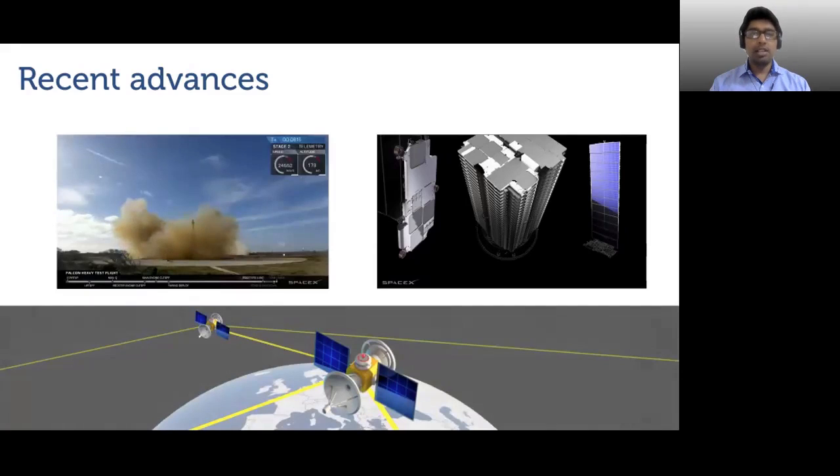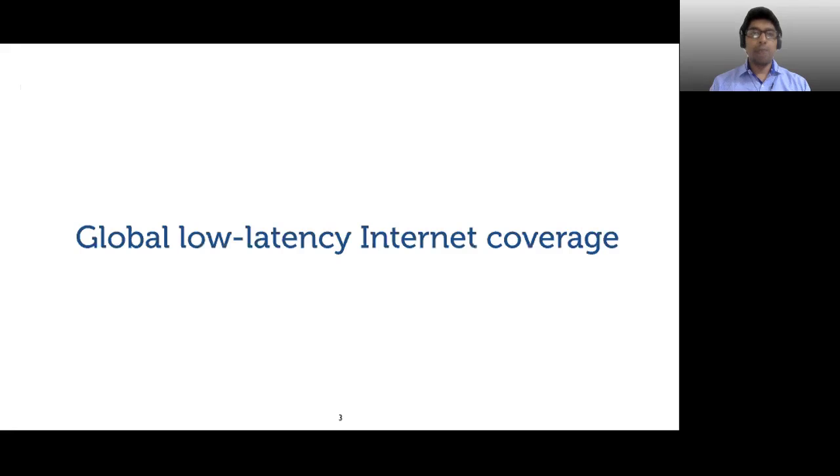Products offering laser inter-satellite connectivity at 10 to 20 gigabit per second at distances up to 8,000 kilometers are already available. But what are all these developments leading up to? The primary goal, it seems, is to build mega-constellations consisting of thousands of low-flying satellites, which provide global low-latency internet coverage.